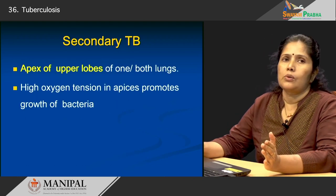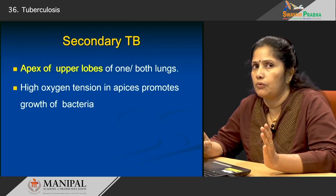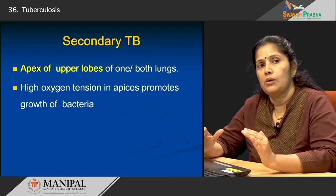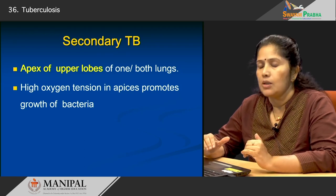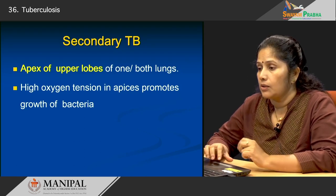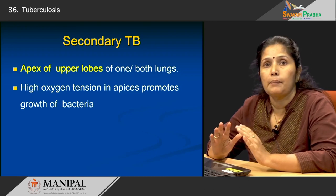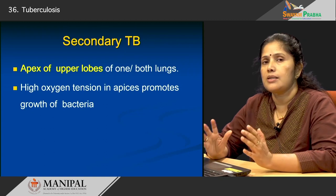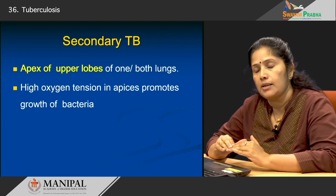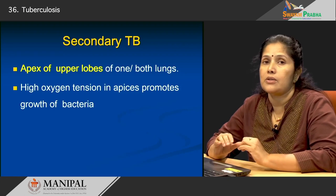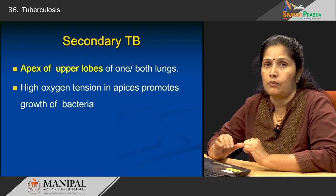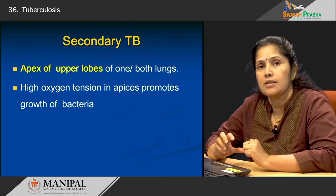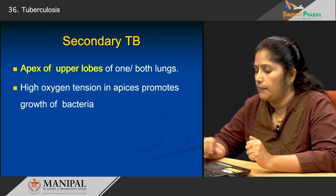In primary tuberculosis the lesion was in the upper part of the lower lobe or lower part of the upper lobe. But in secondary tuberculosis, lesions are always in the apex of either one lung or both lungs. There is a difference in the site of involvement — in secondary tuberculosis it is the apex of the lungs which is involved, because of the very high oxygen tension in the apexes, which promotes the growth of these bacteria.